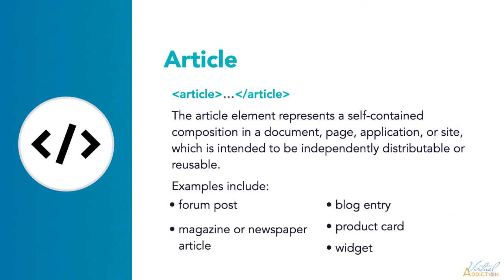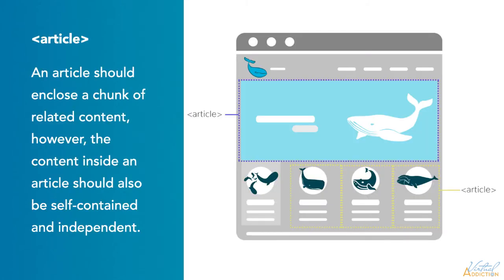Examples include a forum post, a magazine or newspaper article, a blog entry, a product card, a user-submitted comment, an interactive widget or gadget, or any other independent item of content. You should be able to reuse an article and have it make sense if it were published elsewhere. However, the article element isn't specifically for articles as written pieces of content in a magazine or a website. An article in HTML5 is anything self-contained and independent. You can think of it as an article of clothing.